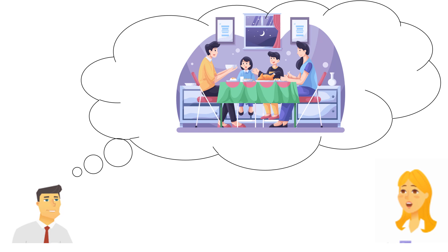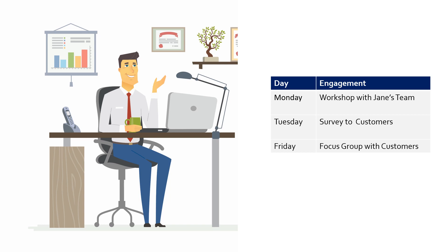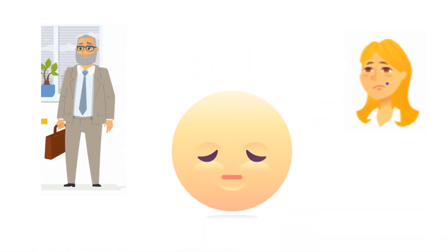Alex wanted to think about the strategy for stakeholder involvement and then discuss it with Jane. He returns to the office, drafts the engagement proposal and shares it with Jane: a full day workshop on Monday, a survey to customers on Tuesday based on Monday's session, and a focus group meeting with customers on Friday. Jane agrees to the plan. Alex arranges a full day workshop at WebWeave's office, booking a big conference room for 20 people with whiteboards, projectors, adequate seating, and refreshments such as lunch, coffee and snacks. He also prepares a comprehensive agenda and sends out invites to all stakeholders.